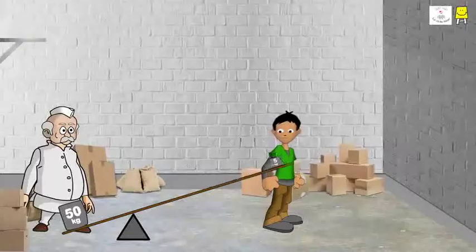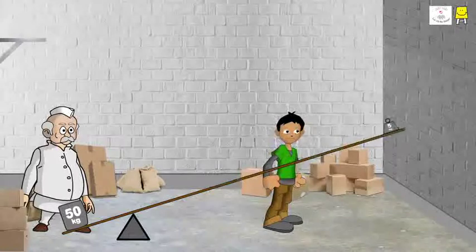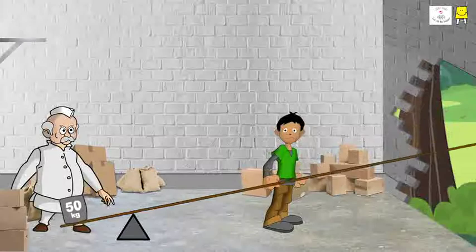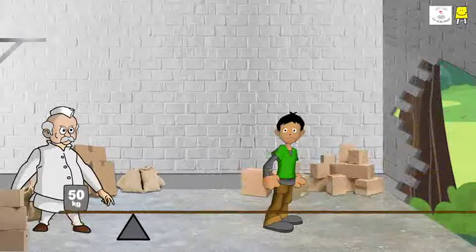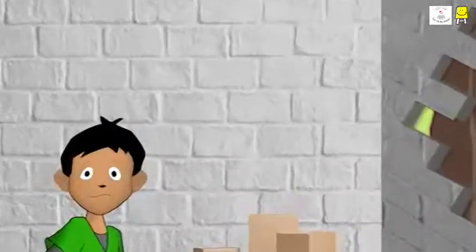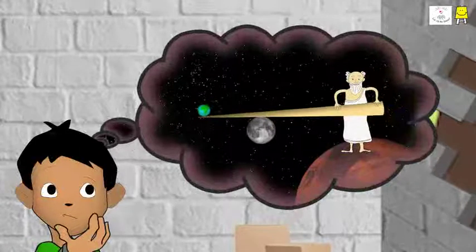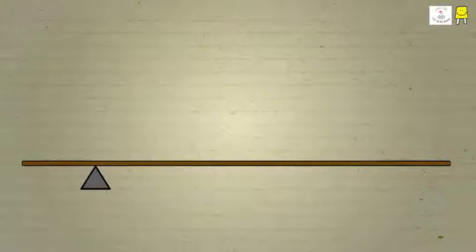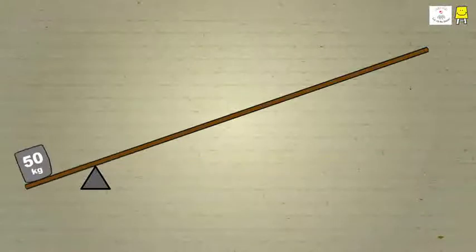He discovered that to make a longer effort arm, he would have to break the shop's wall and even then, he would not be able to raise the load of 50 kilograms. Chintu was worried. He concluded that what Archimedes said was logical but could not be implemented.